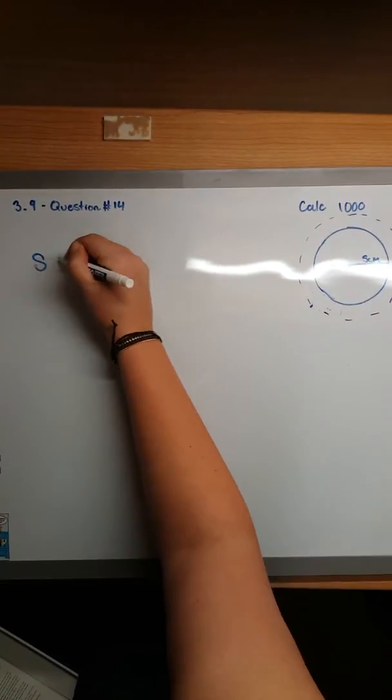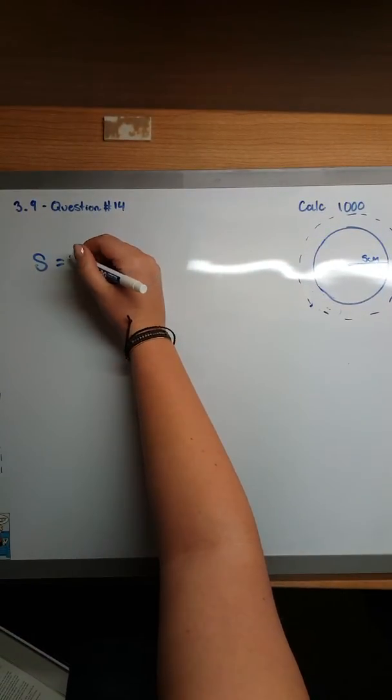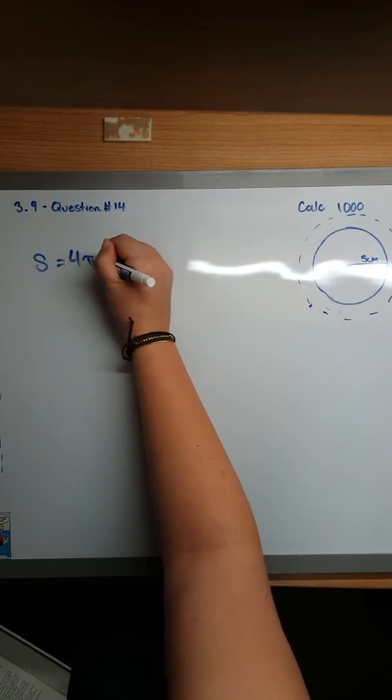First, we're going to start with the formula for surface area, which we will call S, and S is equal to 4πr².